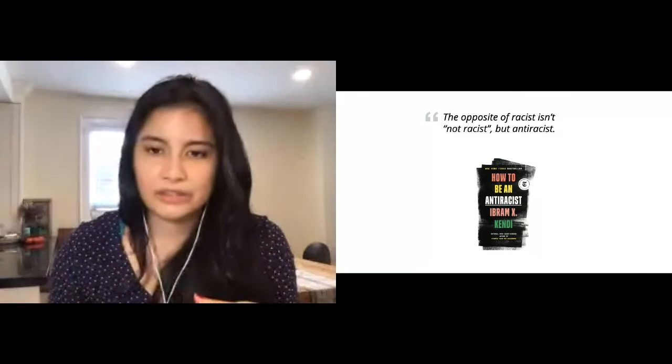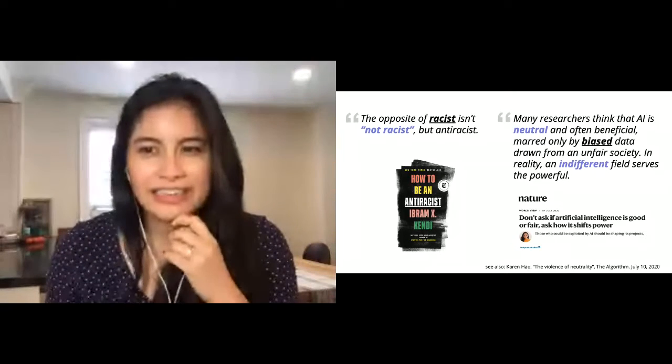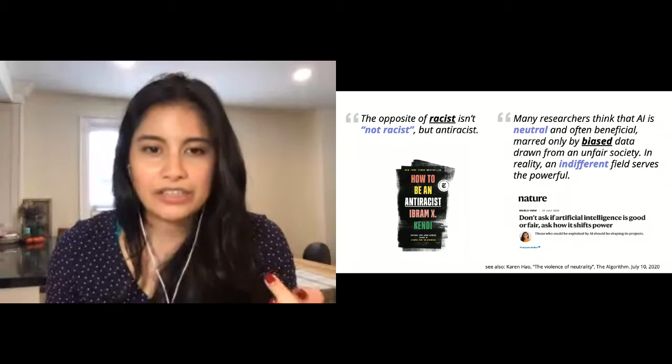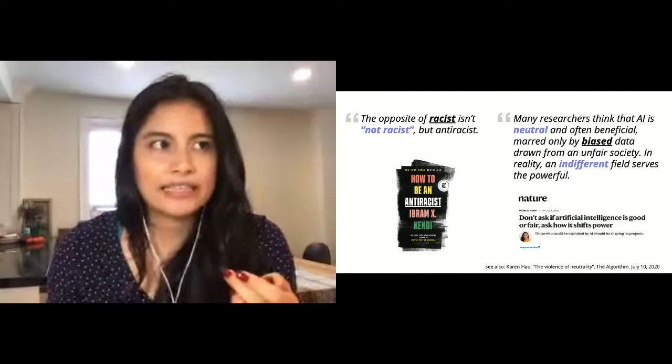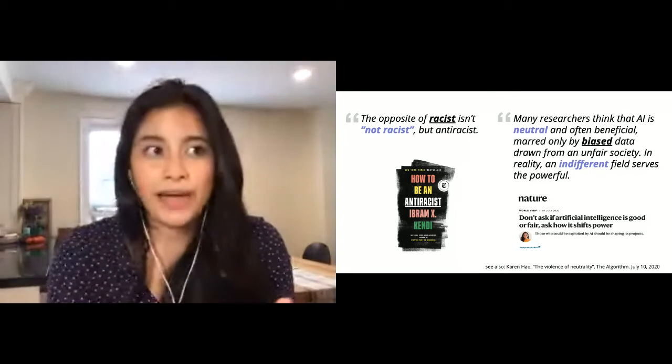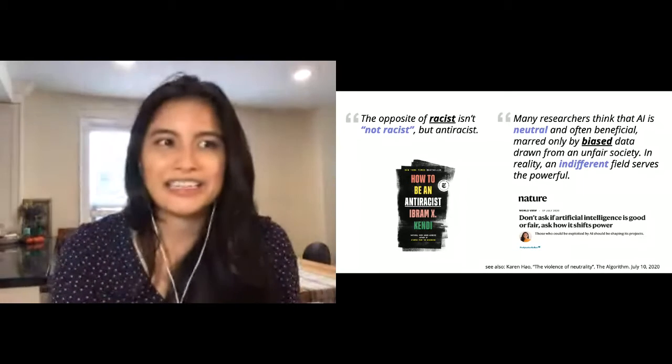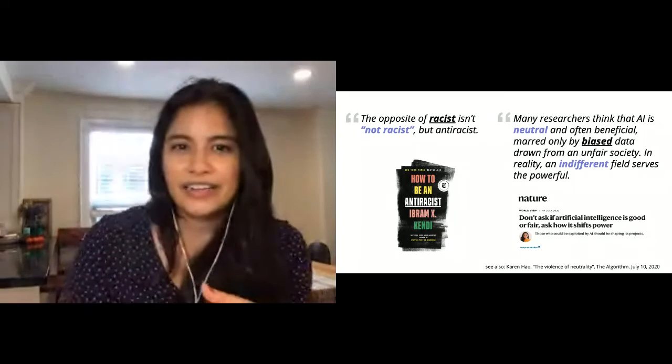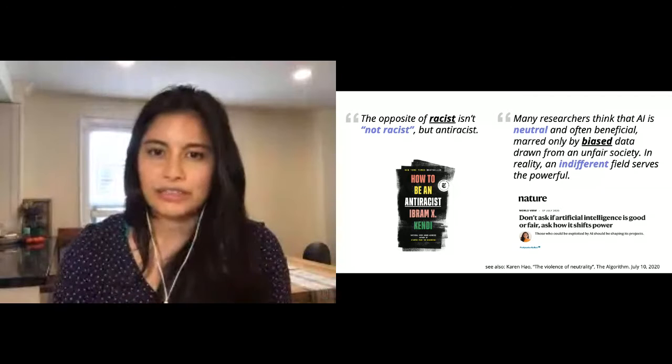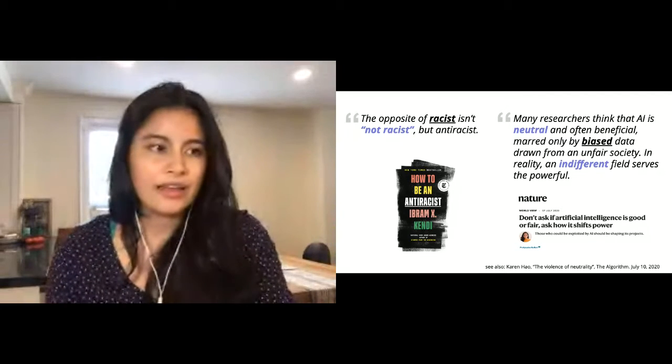I think this is an idea we're starting to see around the ethical AI conversation too. Two weeks ago, Patricia Calori from Stanford and the co-creator of the Radical AI Network published this Nature commentary piece where she says: Many researchers think that AI is neutral and often beneficial, marred only by biased data drawn from an unfair society. In reality, an indifferent field serves the powerful. It's that same idea that AI just considering itself being neutral really still supports a lot of the bias that happens in society.